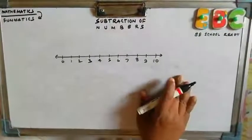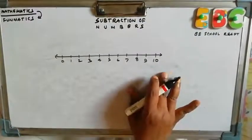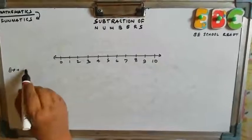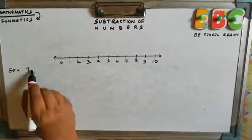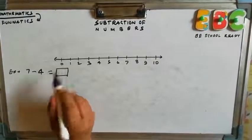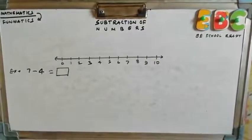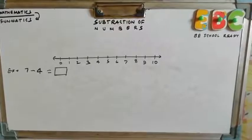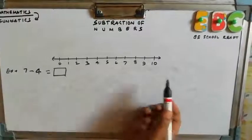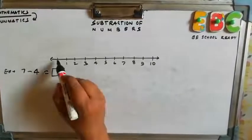This is our number line from 0 to 10. Take an example. We have to subtract 7 minus 4. We have to subtract 4 from 7. So what we have to do first? We have to locate 7 on the number line, starting with 0.